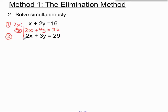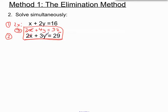Because the x terms are matching up, we're going to focus on these two equations now. If we subtract between these two equations, that will allow us to do 2x minus 2x making 0 — eliminating the x's. So 2x minus 2x cancels out. 4y minus 3y leaves us with y. And 32 minus 29 is 3.